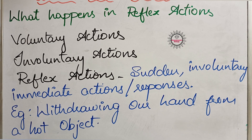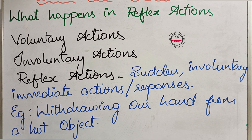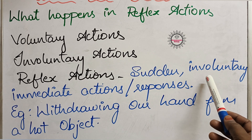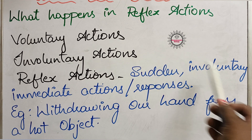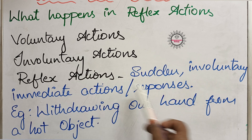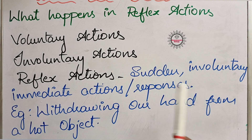The third type of actions are reflex actions. These actions take place within a fraction of seconds in our body. They take place involuntarily, without our knowledge, but within a fraction of seconds. That type of sudden, involuntary, and immediate action or response is called a reflex action. For example, withdrawing our hand from a hot object — it is an involuntary action, but it takes place within a fraction of seconds, that's why we call it a reflex action.